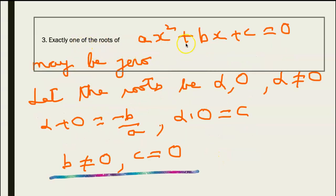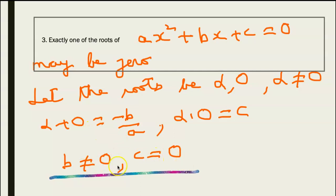Find the condition that exactly one of the roots of ax² + bx + c = 0 may be 0. So let the roots be alpha and 0, where alpha ≠ 0. So I have alpha + 0 = -b/a and alpha × 0 = c. So b ≠ 0 and c = 0. Why is b not equal to 0? Because alpha is not equal to 0.